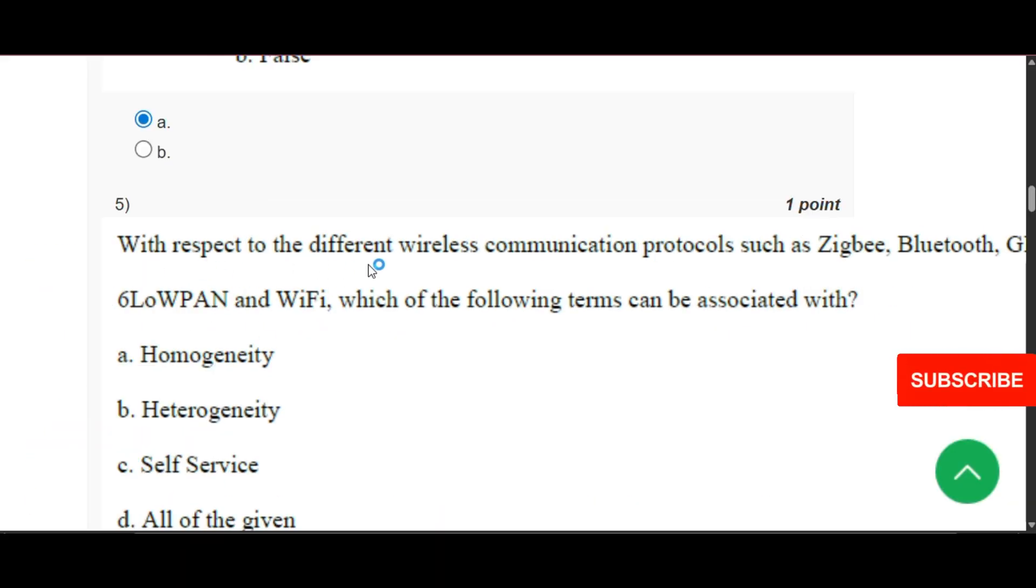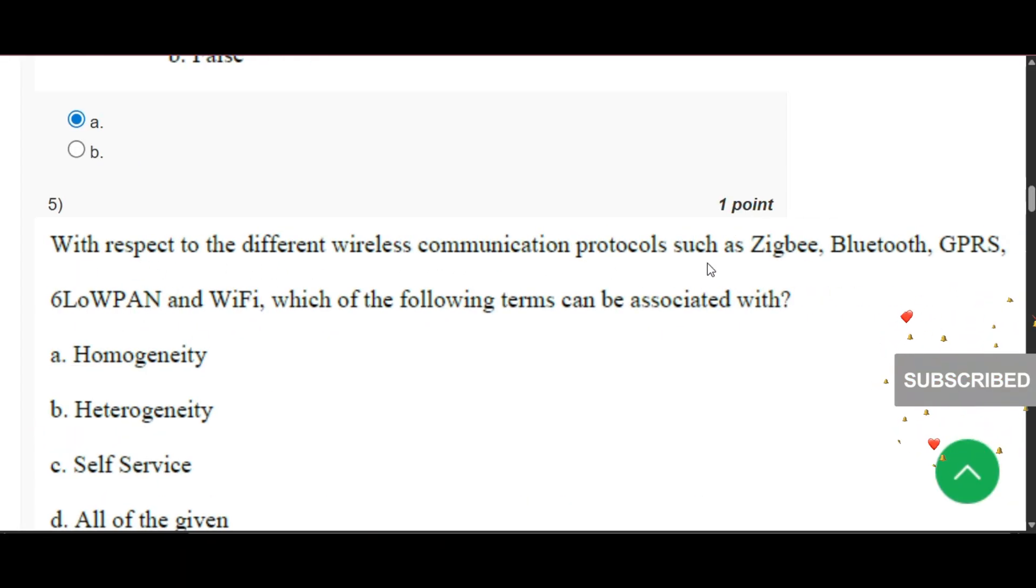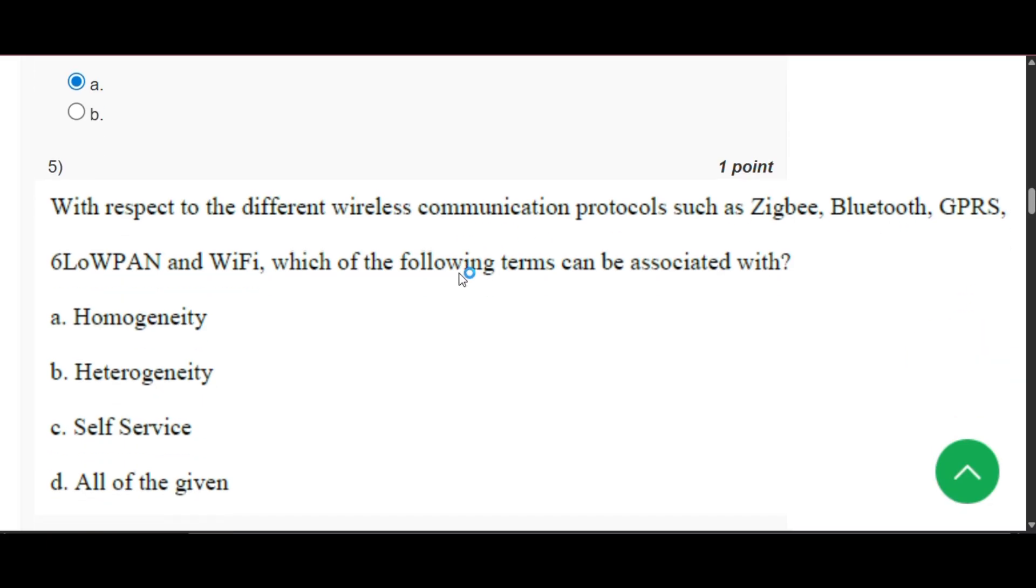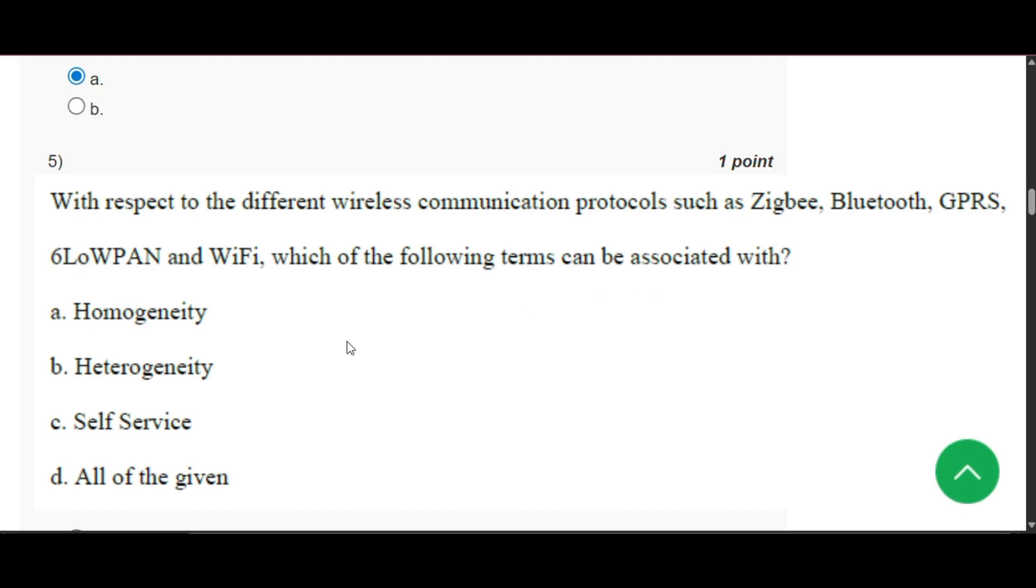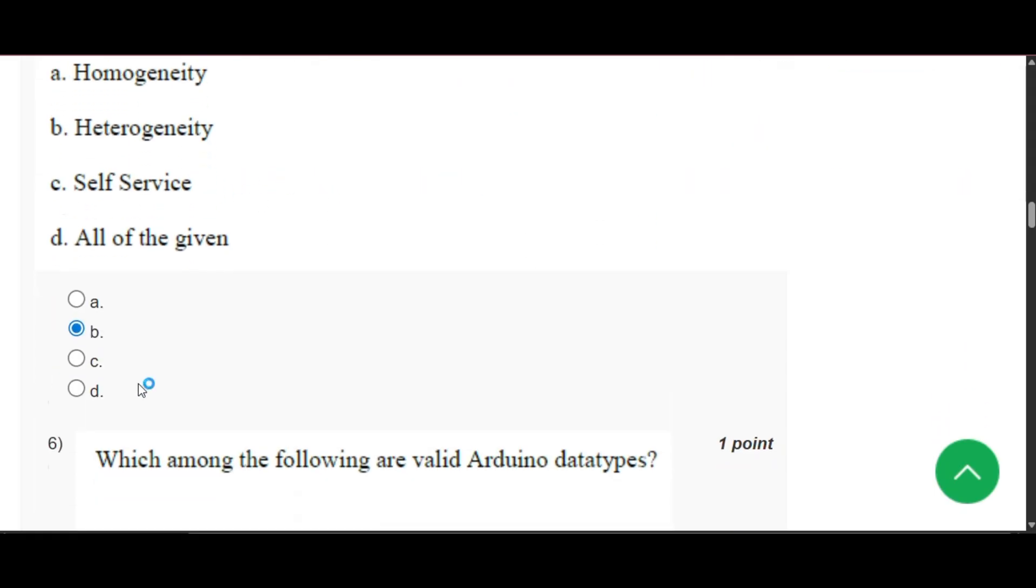Now question number 5: With respect to the different wireless communication protocols such as Zigbee, Bluetooth, GPRS, 6LoWPAN, and Wi-Fi, which of the following terms can be associated with? The answer will be heterogeneity. That is option B.